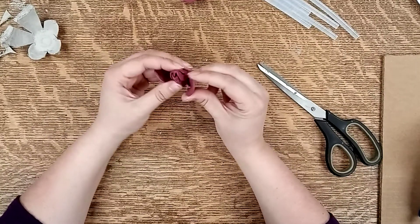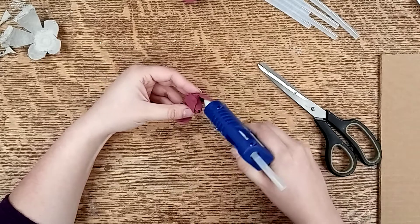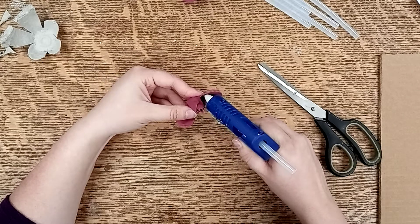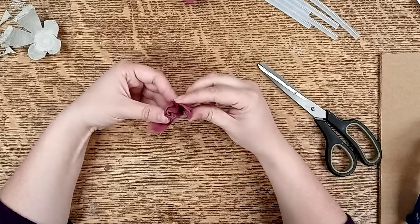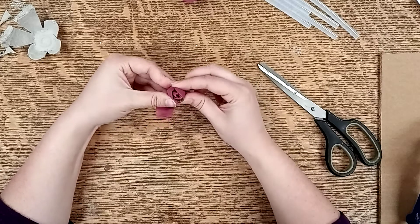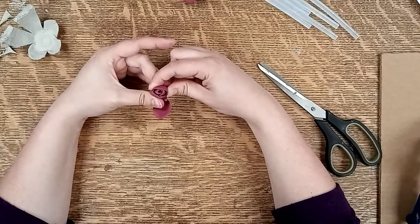And then you take another petal and you wrap it around the outside like so. Put the glue on the inside corners there and you can see the rosebud starting to take shape.